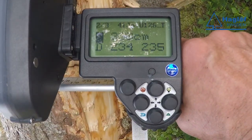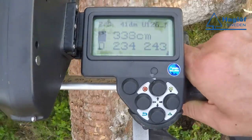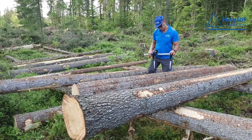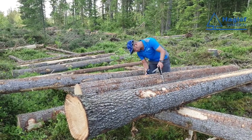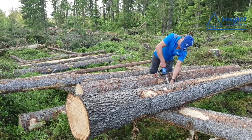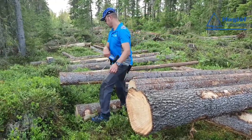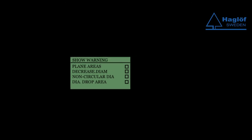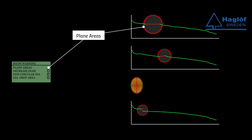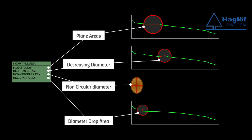All control measurements are done on bark. If the bark is missing or there are twigs or bumps, move the caliper to another position. A diameter can be replaced if a new diameter is measured within ±20 cm. Do not measure below dbh at the first log, and not below 30 cm on other logs. The caliper can be set up to display different pre-warning messages that can be of great help for the user, selectable in the application — such as machine diameter and plane area, decreasing diameter, non-circular diameter, and diameter drop area.